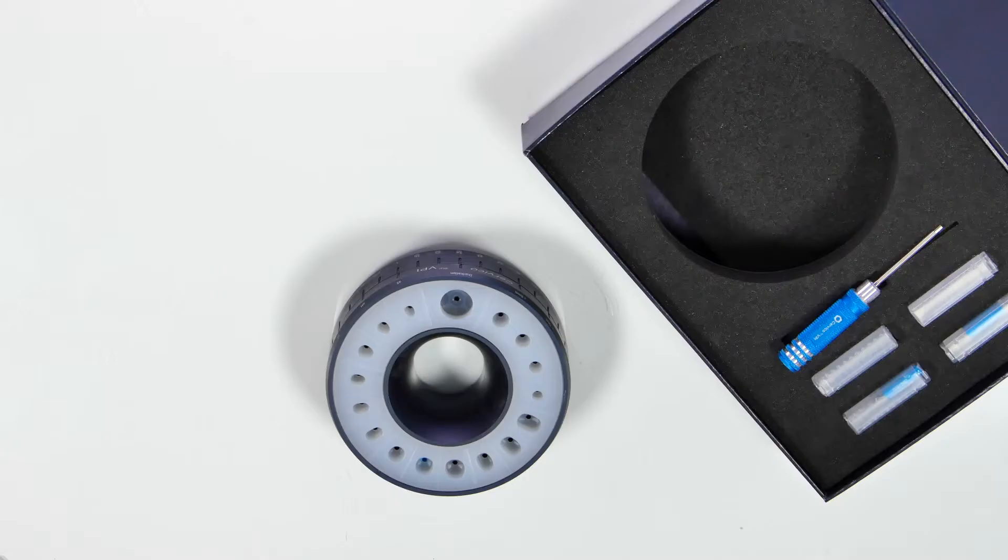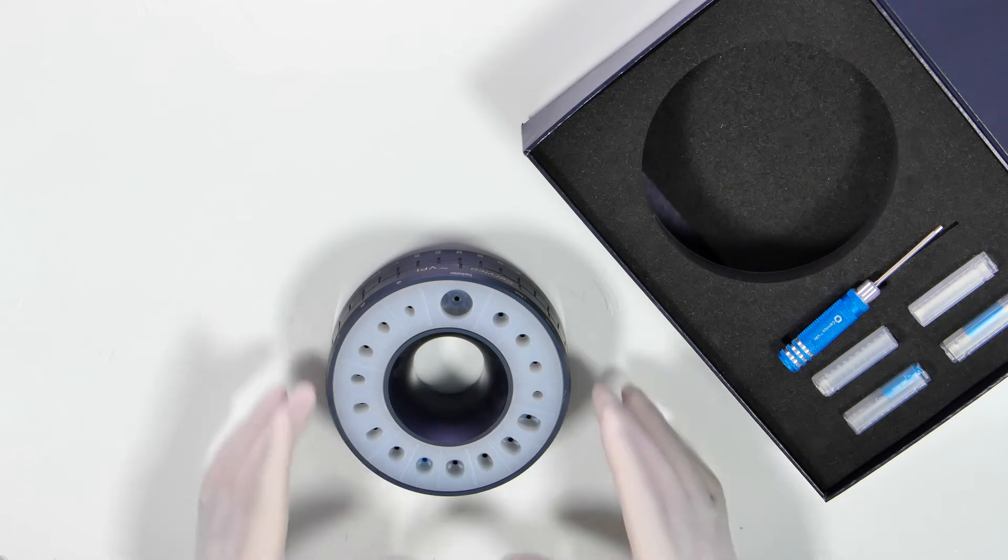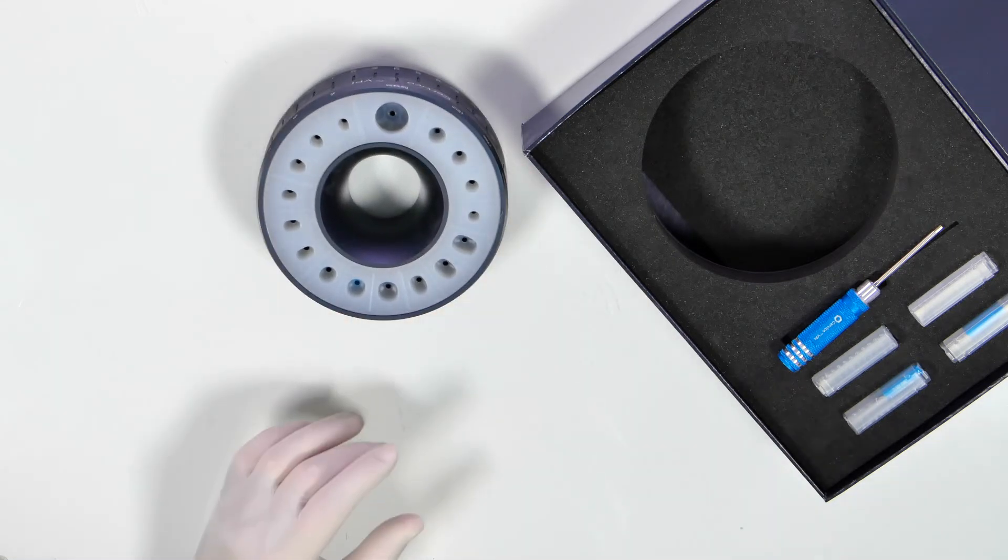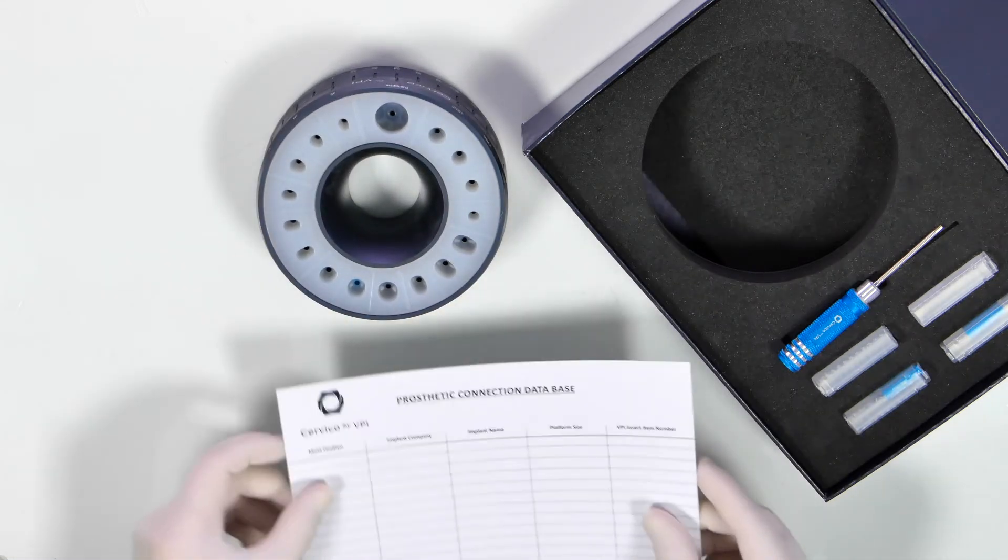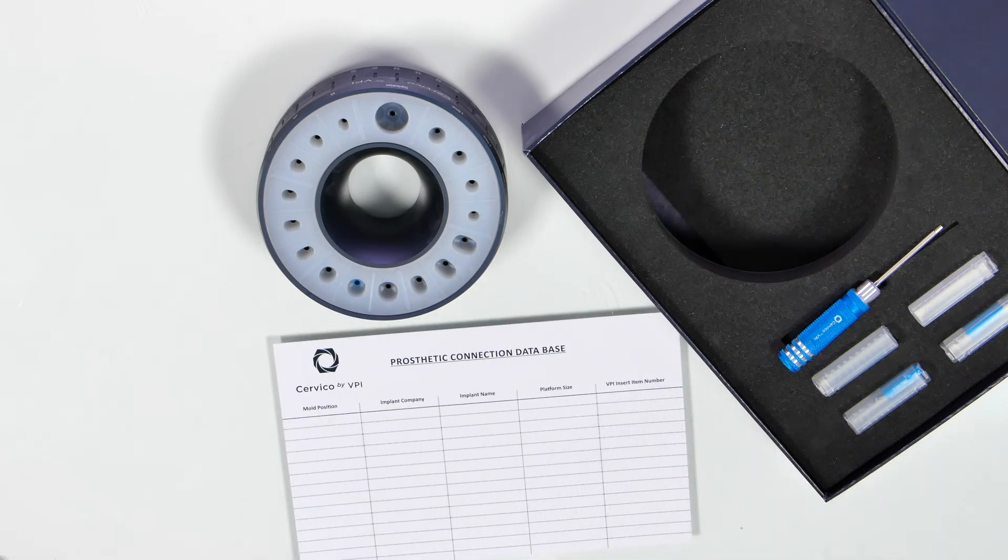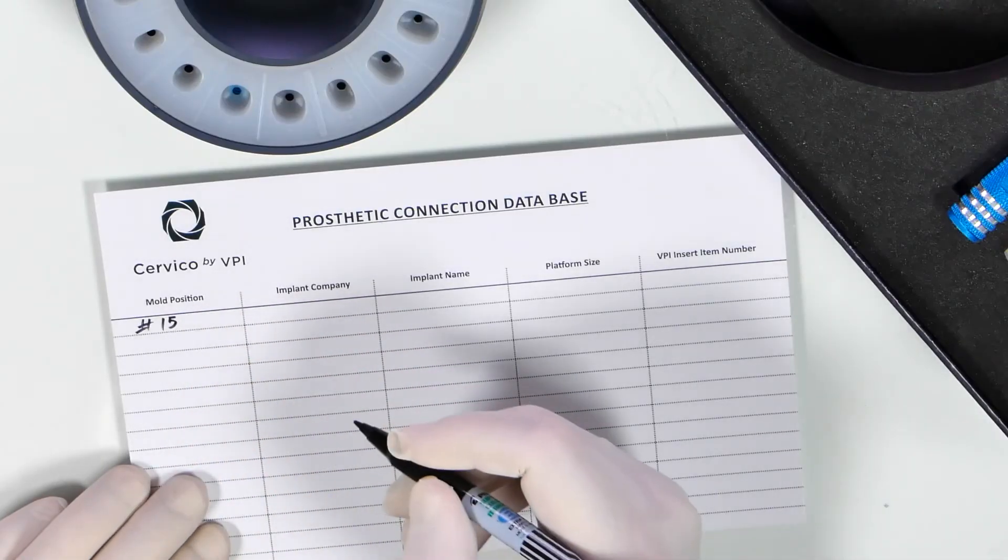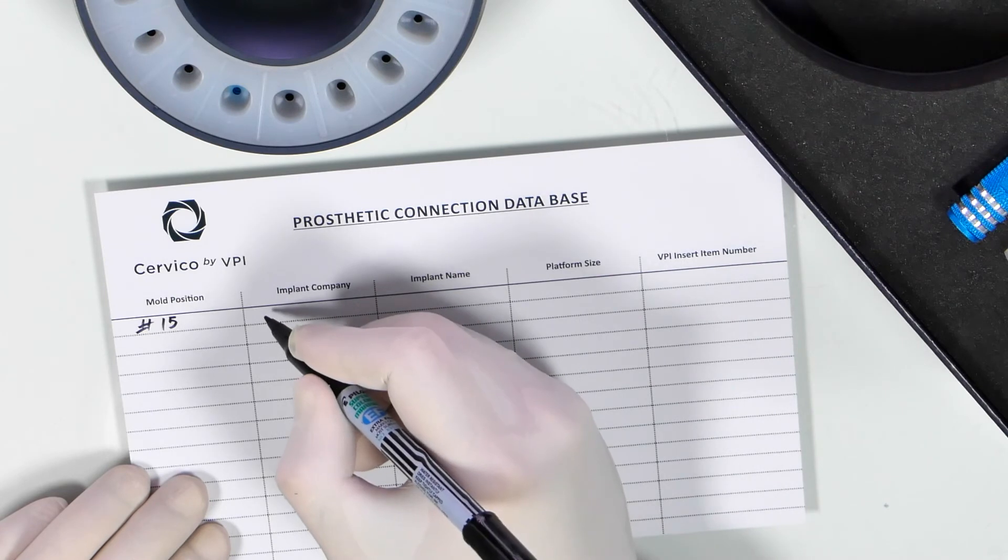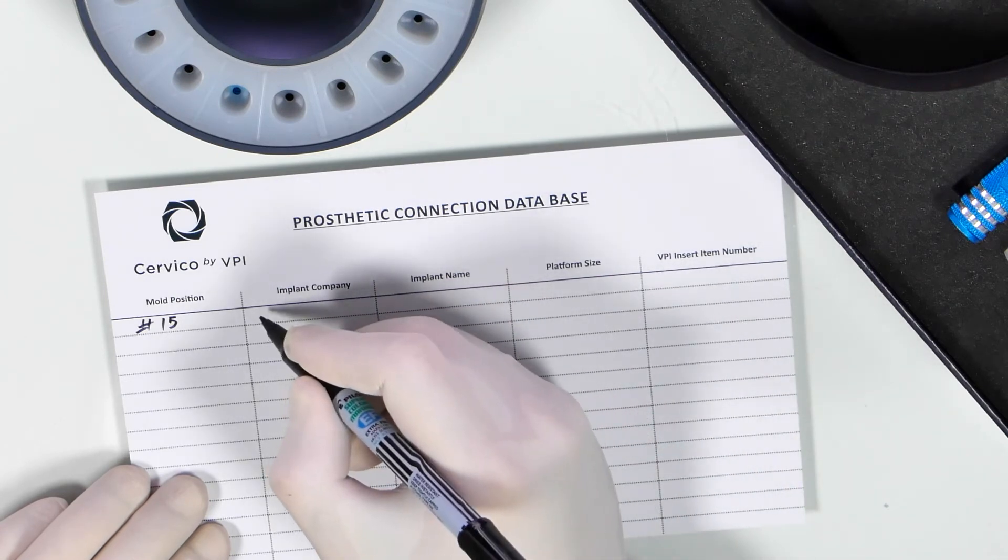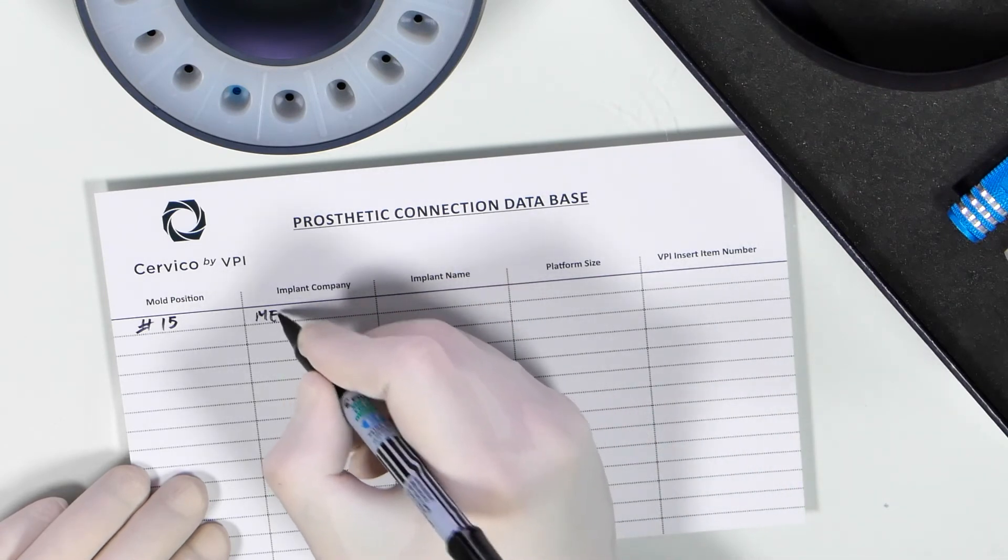The VPI prosthetic connection inserts are an integral part of the base of the mold. Once you place your order, you will have to specify what kind of surgical protocol you use. Once the company installs the insert into the base, it will fill in the prosthetic connection database card for you so that you are aware of the position that the insert has been installed.